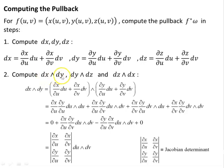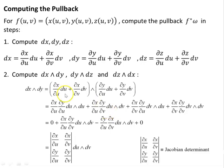Next step: compute dx∧dy. That's dx wedged with dy. The du∧du term goes to zero — any differential wedged with itself is zero. We're left with (∂x/∂u)(∂y/∂v) du∧dv and (∂x/∂v)(∂y/∂u) dv∧du. Since dv∧du equals minus du∧dv, we swap the order and put a minus sign. Taking out the common factor du∧dv, we get the determinant of the matrix of those partial derivatives multiplied by du∧dv.